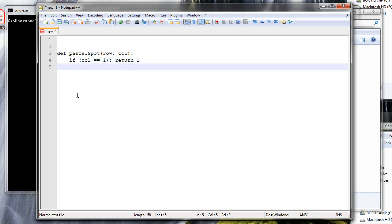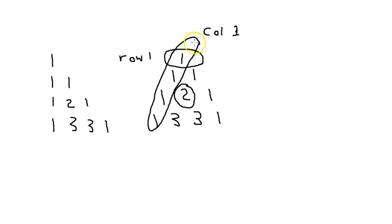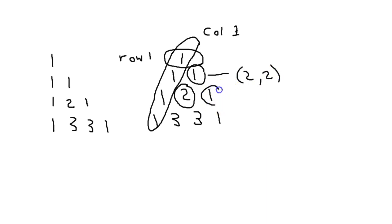If the column and the row are the same, we also want to return one — so `if col == row: return 1`. Looking back at our diagram: the top one has both row and column equal to one. If row is two and column is two, that's the one at position two-two. Row three column three gives us the one at three-three. So if row equals column we return one, and if column is one we return one. Otherwise we want to return the sum of the two above.